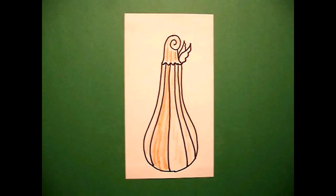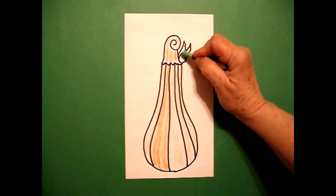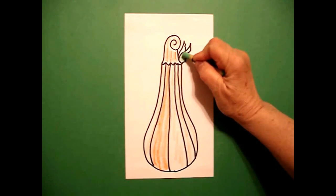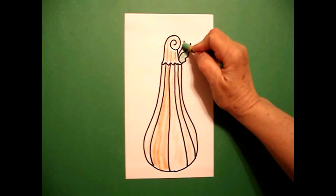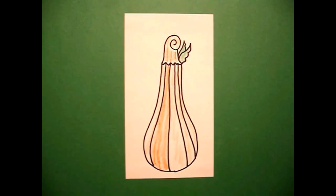Okay. Now I'm going to take a green and I'm just going to color in my two little leaves. Okay. Let's see what this looks like all colored in.